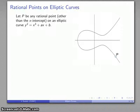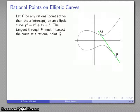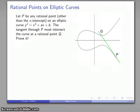So I have some rational point on the elliptic curve, and what I'm going to do is draw the tangent line through that point. This tangent line has to intersect the curve at some other point, and it turns out that this other point of intersection will also be a rational point. There's a fairly short proof of this involving a little calculus, a little algebra, and a little theory of equations.